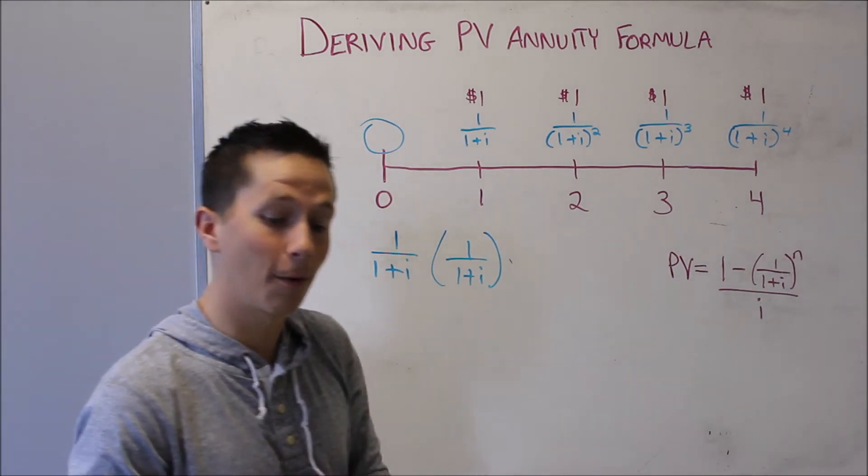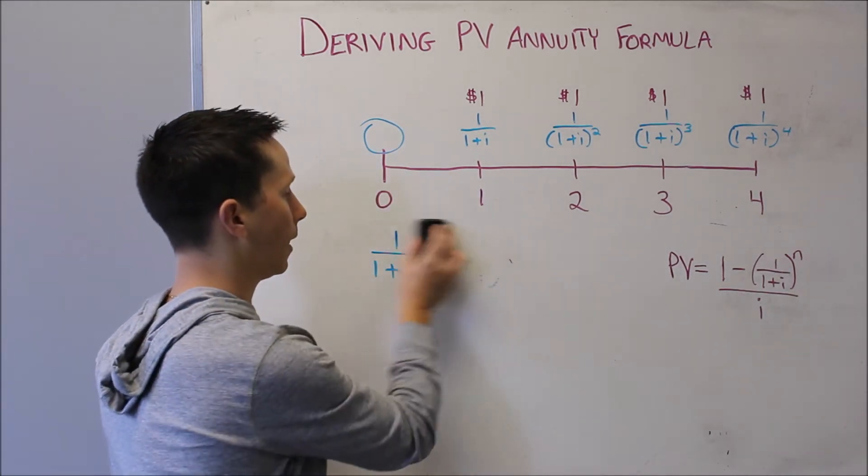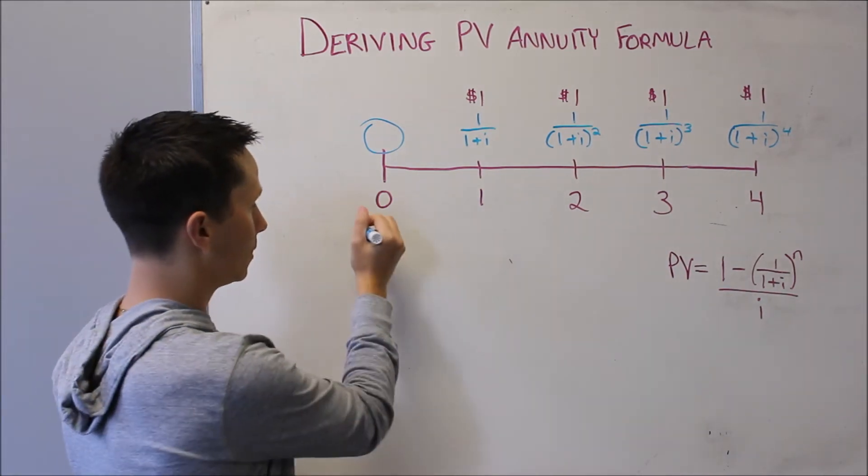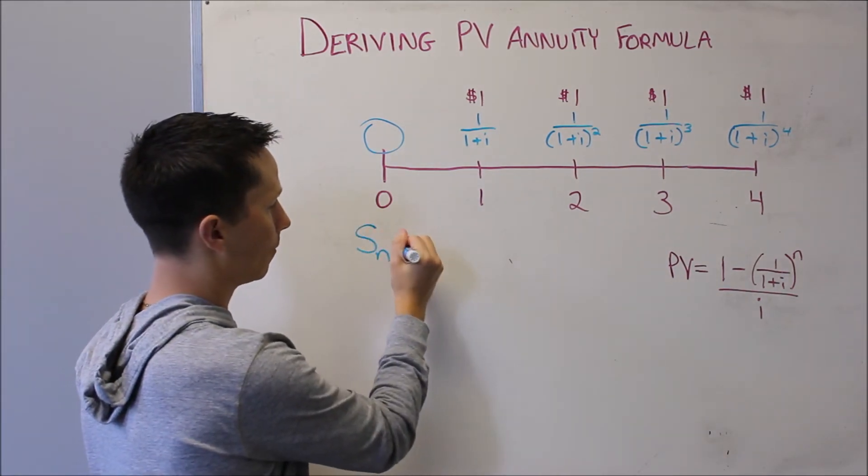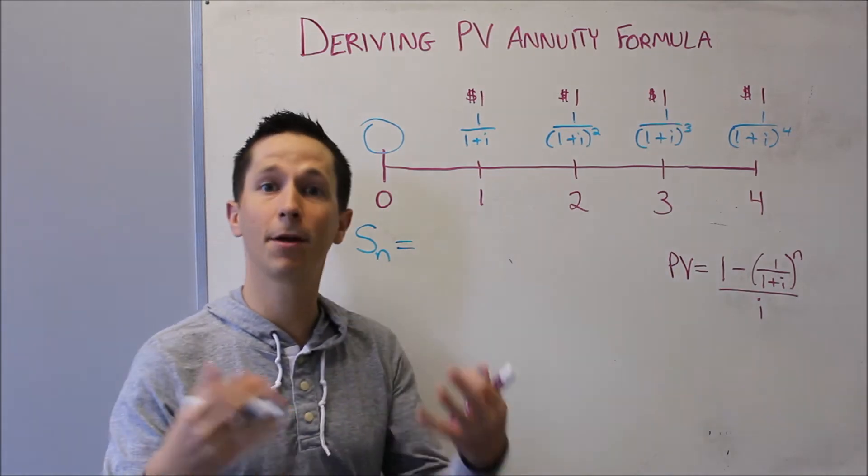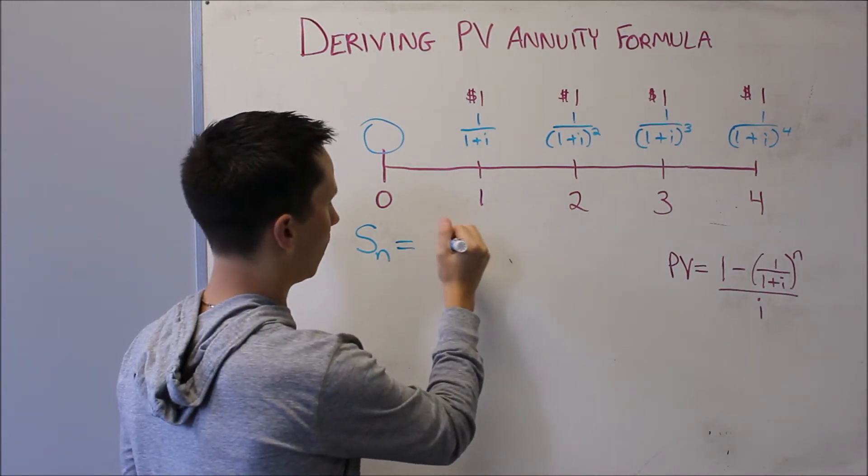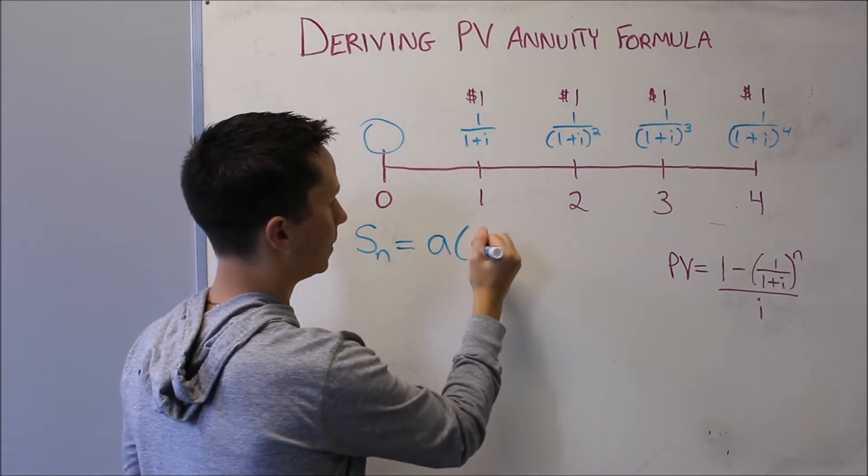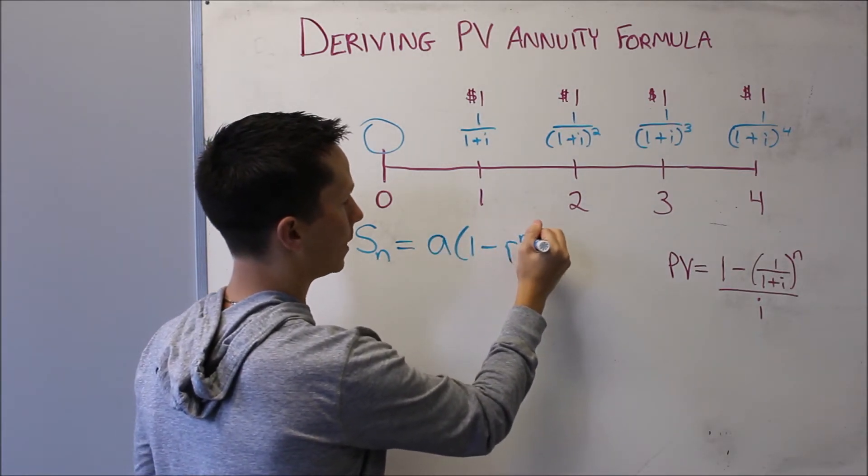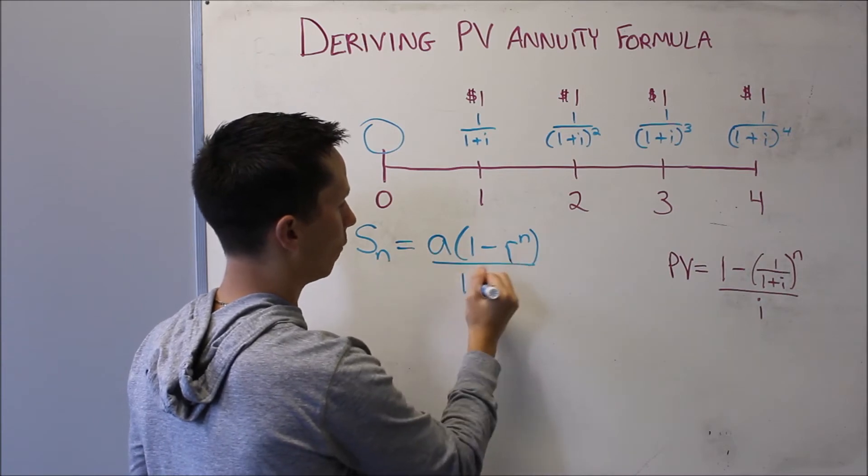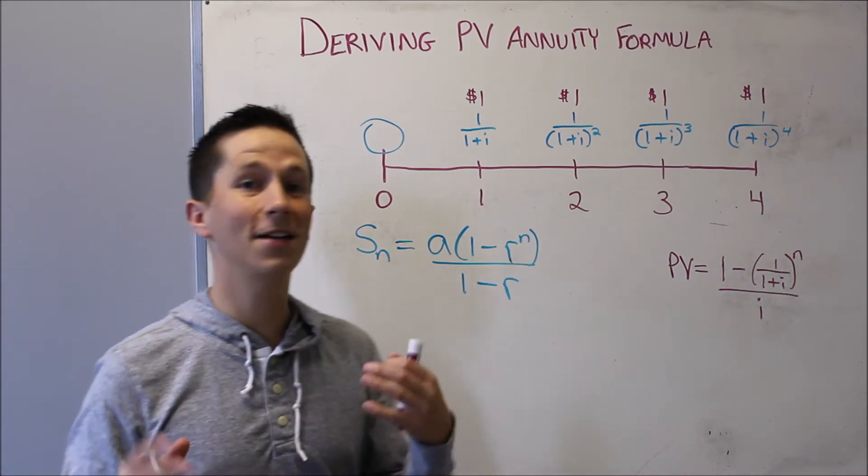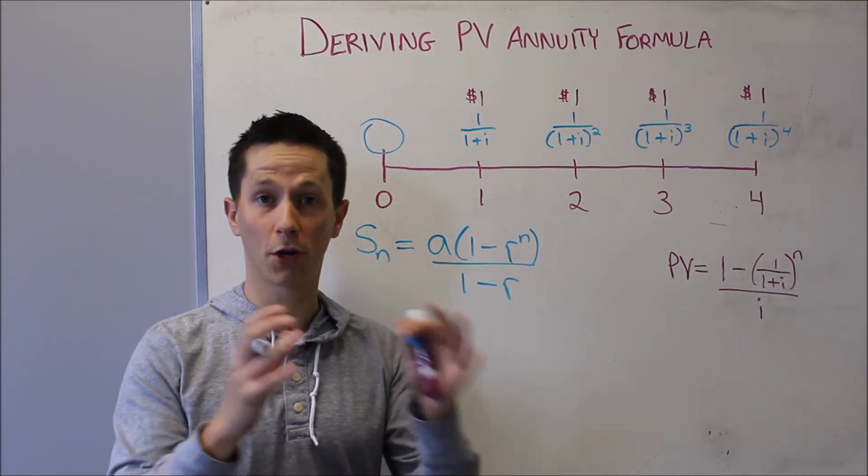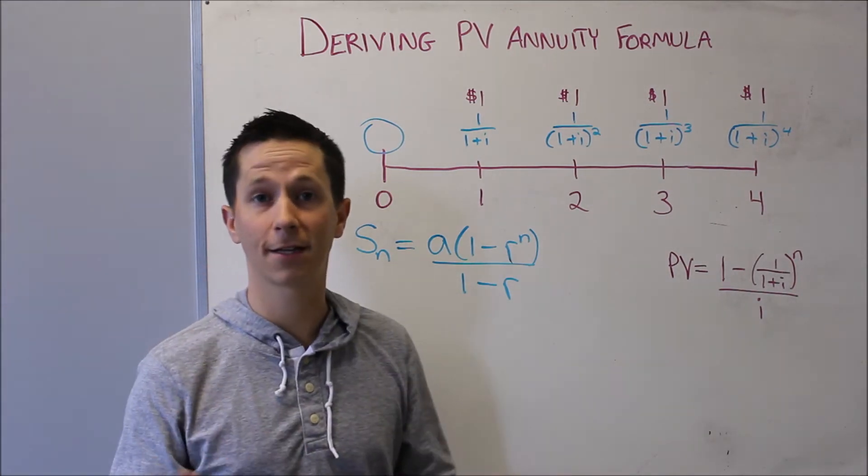And hopefully we remember the formula for the sum of the geometric series, I'll write it here. The sum of an n period geometric series is the first term, which I'll write as a, into 1 minus r to the n over 1 minus r. So a is your first term. r is the common ratio, so what you're multiplying by to get to the next term. And n is how many terms.